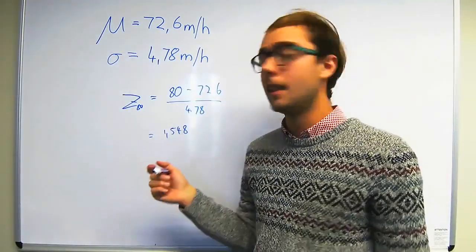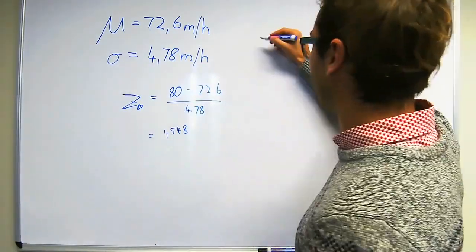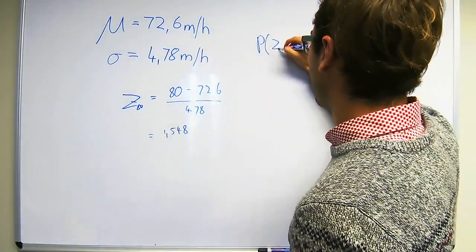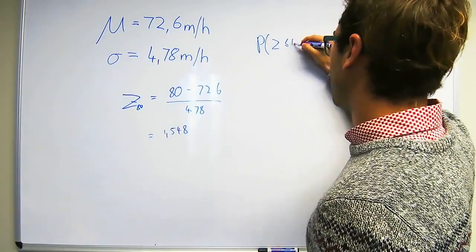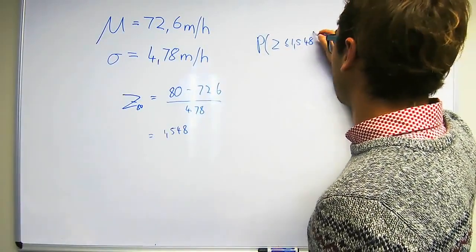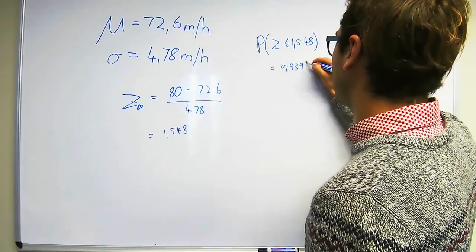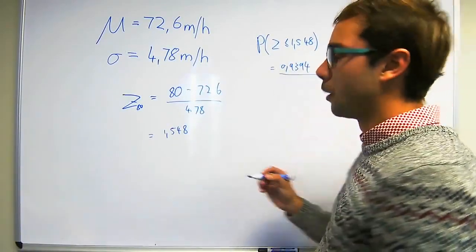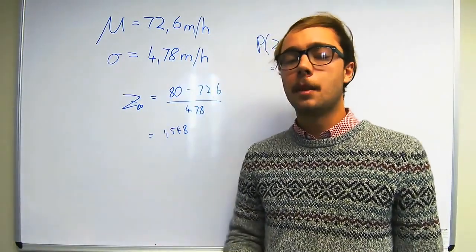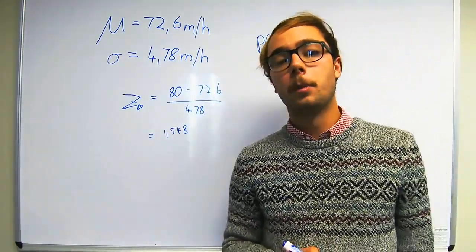When we go and find this in the Z-table we find that the probability of Z being less than or equal to 1.548 is equal to 0.9394. So the probability of people traveling less than 80 mph is 93.94%.